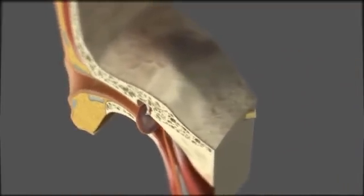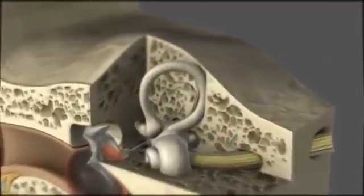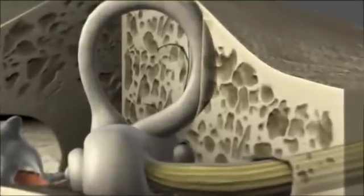The organ of Corti is located in the cochlea, a spiral, three-chambered, snail-like structure within a bony matrix.